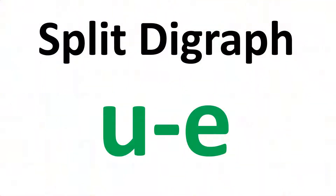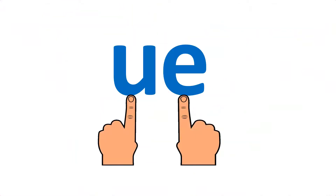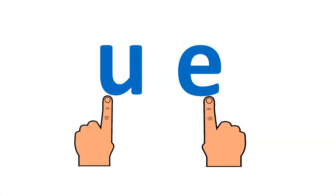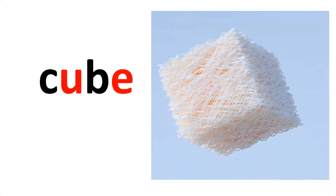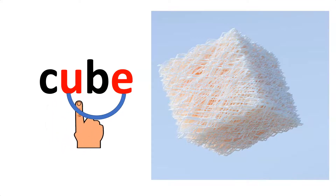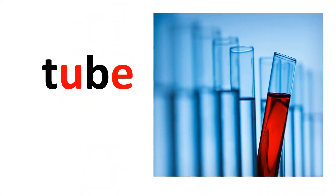Split digraph UE. When the UE digraph gets split, we get the UE split digraph and we read it as a U. For example, UE split digraph in the word 'cube'. UE digraph in 'tube'.